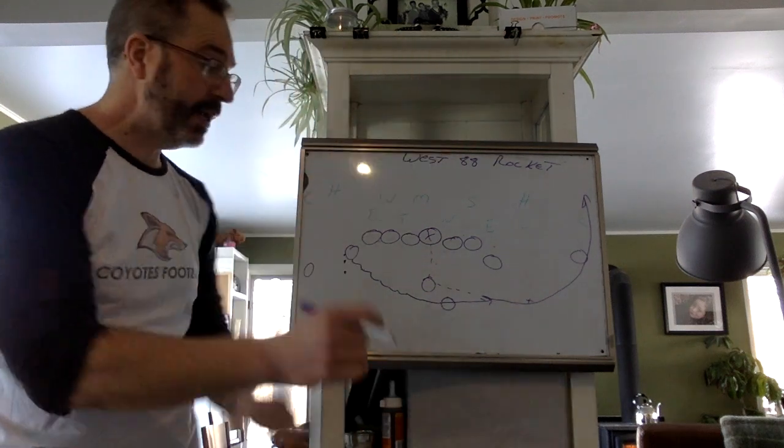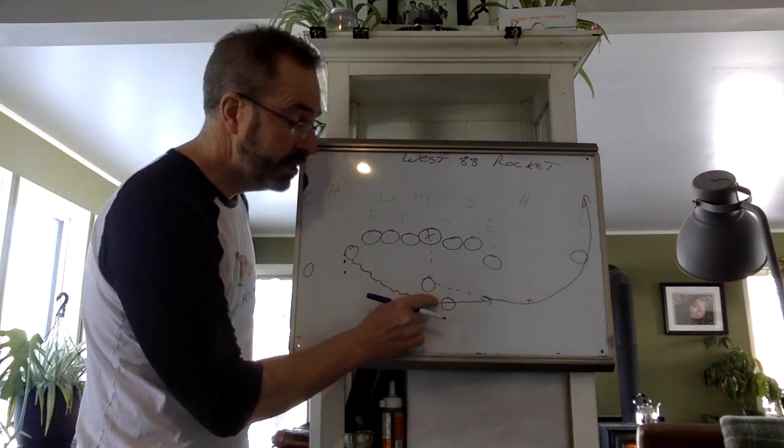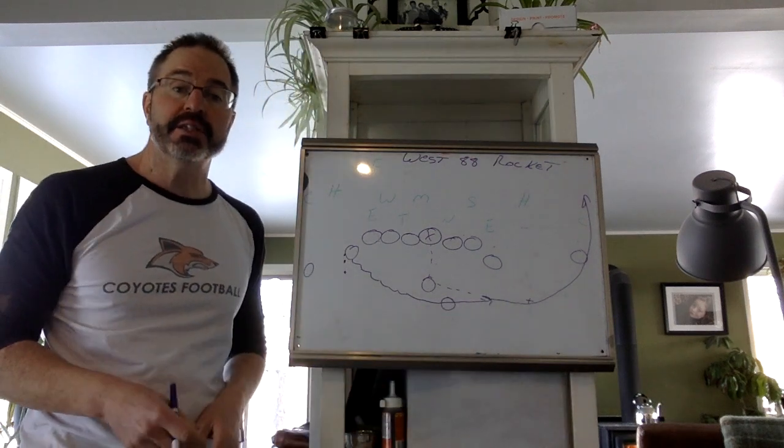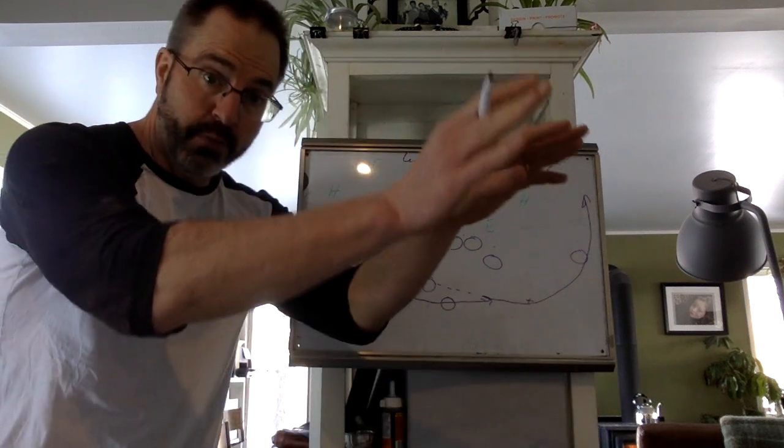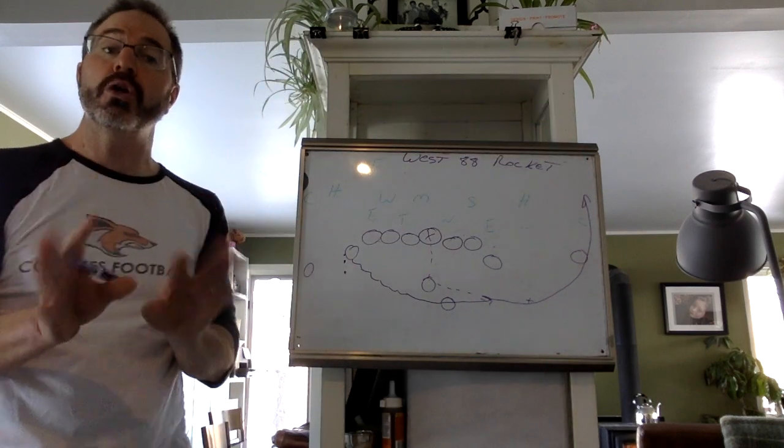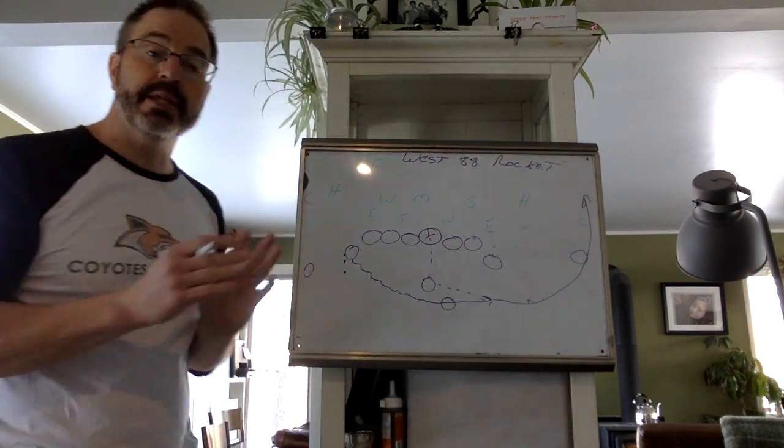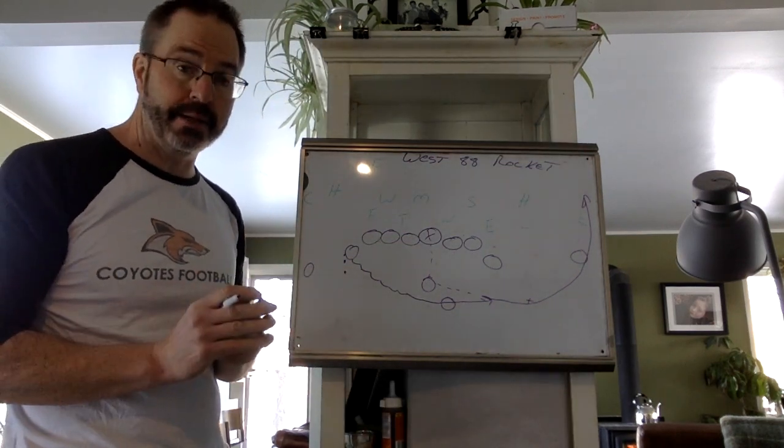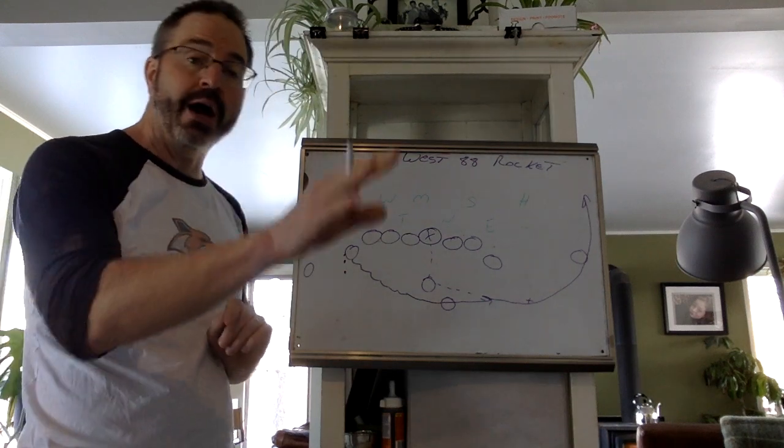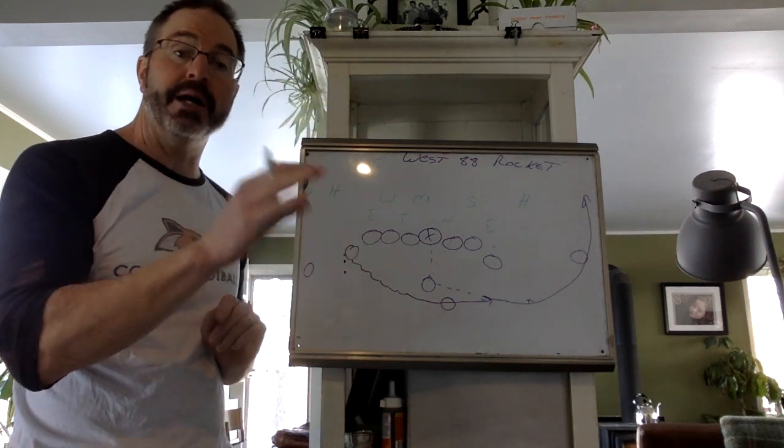Two-hand overhand pass to Noah, who's jetting outside. Now, Grayson, if you need to take a step to get some more velocity and reach on the ball, go ahead. But the name of the game in this is speed, because we're trying to get the ball outside as fast as we possibly can.